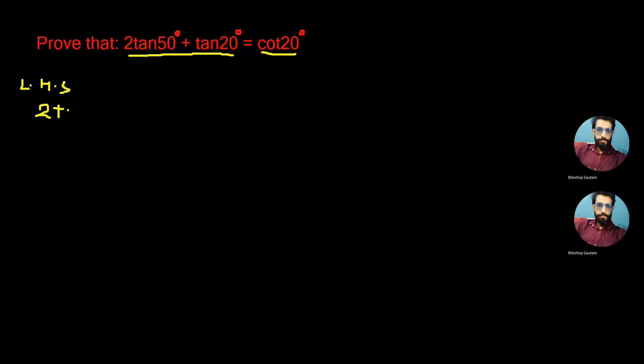2tan50° + tan20°. As 50° is same as 90° minus 40°, we can write 2tan(90° - 40°) in place of 50° plus tan20°.